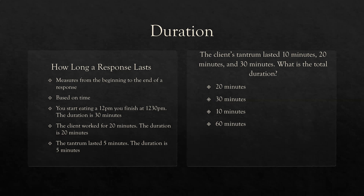Don't overcomplicate duration and frequency — you already understand what they mean. Practice question: the client's tantrum lasted 10 minutes, 20 minutes, and 30 minutes. What is the total duration? RBTs especially should expect questions about totals and averages. For a total, you're simply adding up the durations. Our first tantrum lasted 10 minutes, the second was 20 minutes — total so far is 30 minutes. The last one lasted another 30 minutes, so 30 plus 30 equals 60. Our total duration is 60 minutes.